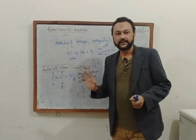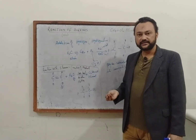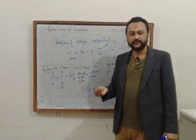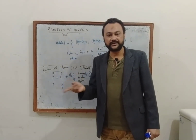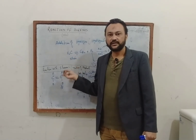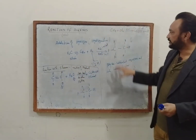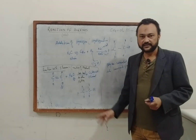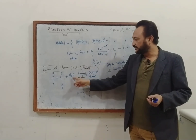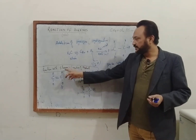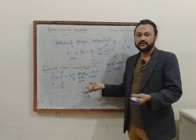My dear students, as far as your syllabus is concerned — O level, IGCSE, and 9th class students — this is the general summary of reactions of alkenes. The important reactions are: addition of hydrogen (hydrogenation), addition of halogen (halogenation), and addition of water or steam (hydration) to make alcohol.